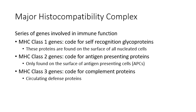Before going further, we need to understand your own cell surface receptors — proteins found on the surface of your own cells. You have a group of genes called the major histocompatibility complex, or MHC. Remember that genes are recipes for proteins, so this MHC is a series of genes that code for proteins very important in your specific immune response. We divide these genes into three separate classes. MHC class 1 genes code for proteins that act as self-recognition markers on the surface of your cells.